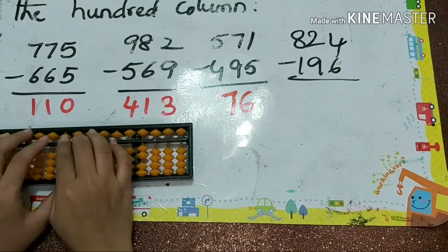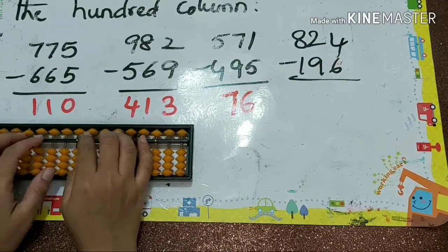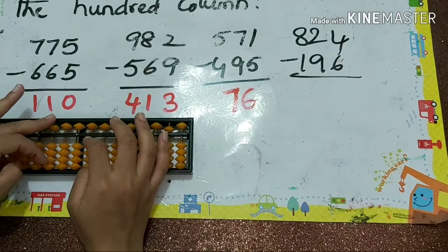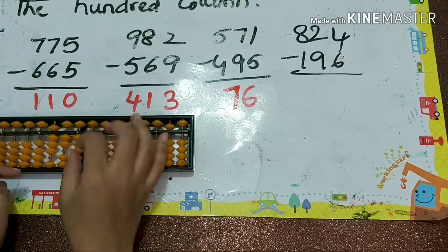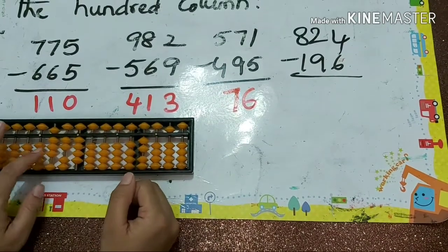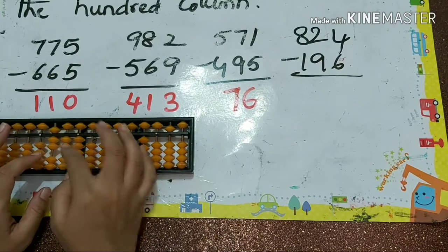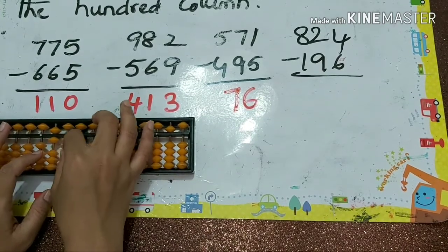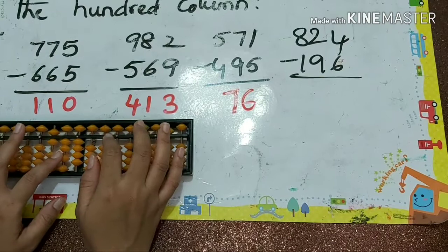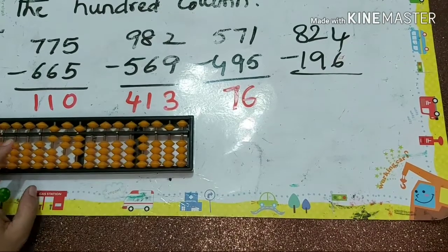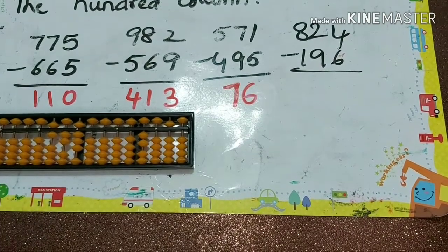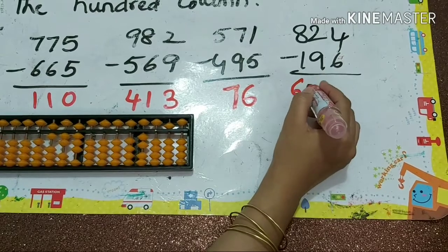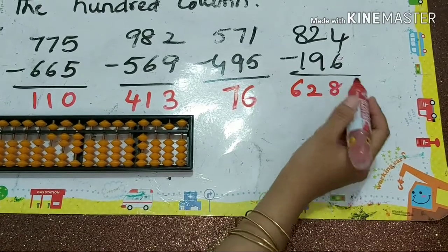Next one: 824 minus 569 (approximately). Minus 5, minus 6, minus 9 — that is minus 10 plus 1. Minus 6: papa down, mama down, baby's down. Answer is 628 (approximately 255, corrected to 628 as stated).